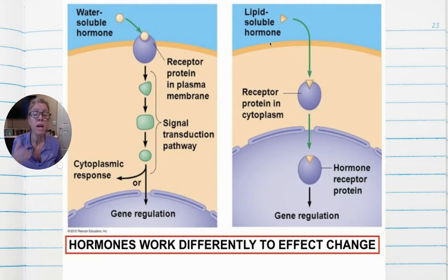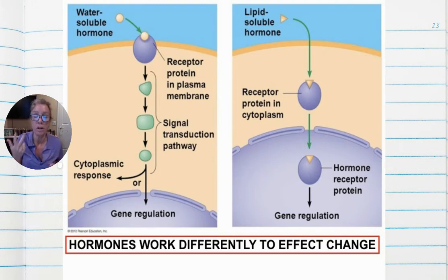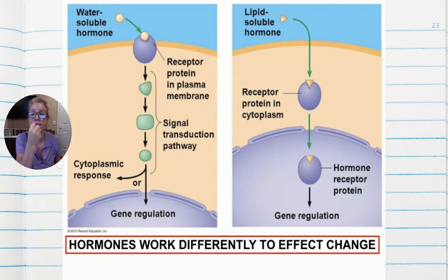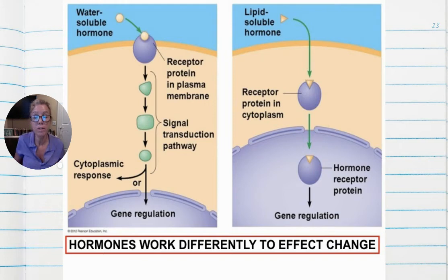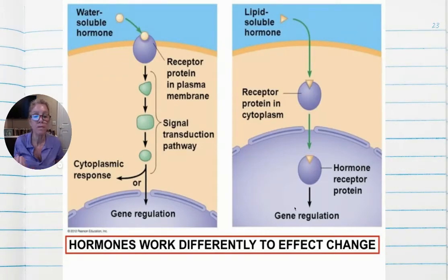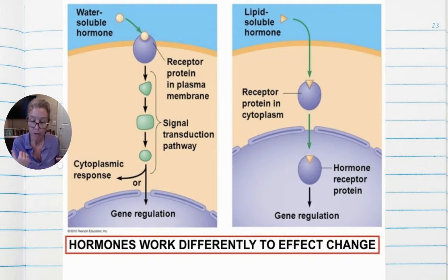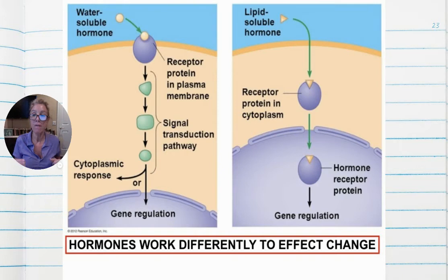Lipid-soluble steroid hormones — including estrogen, progesterone, testosterone from the gonads, and glucocorticoids, mineralocorticoids, and cortical sex hormones from the adrenal cortex — can cross right through the phospholipid bilayer because lipid dissolves into lipid. They bind to a receptor inside the cell, influencing gene regulation. In your notes: peptide hormones are water-soluble and trigger second messengers; steroid hormones are lipid-soluble and affect gene expression.